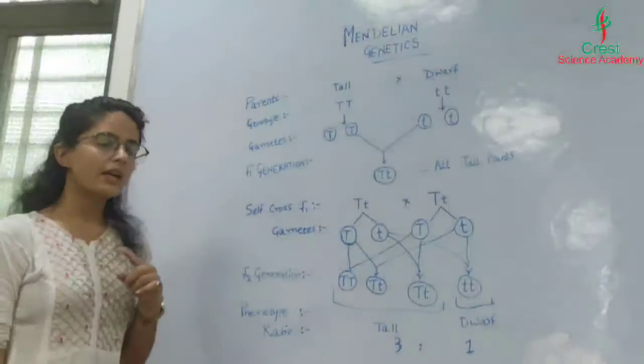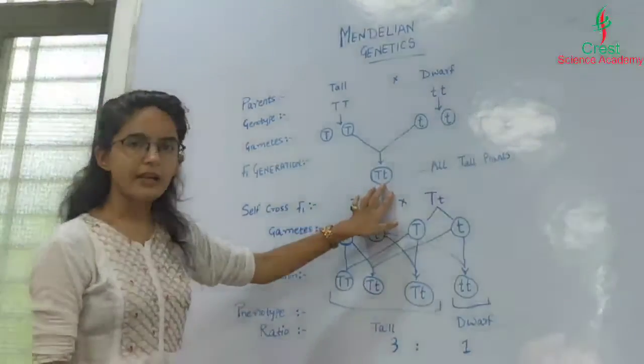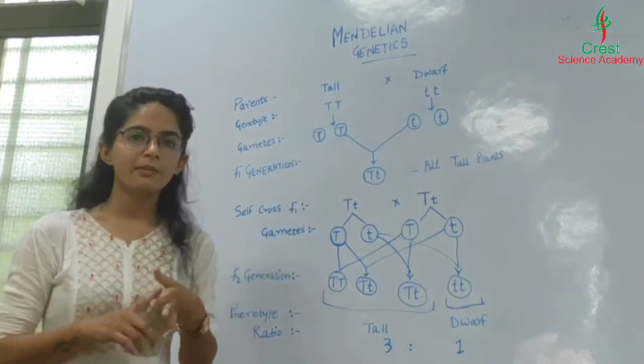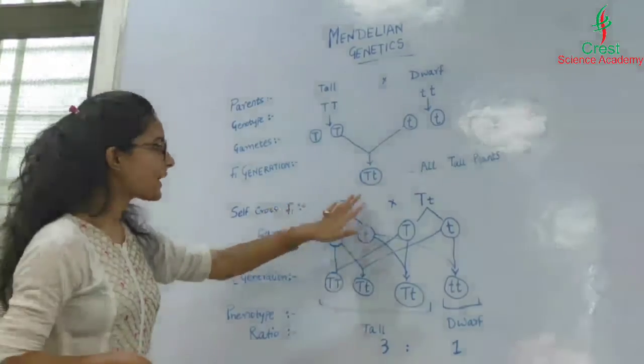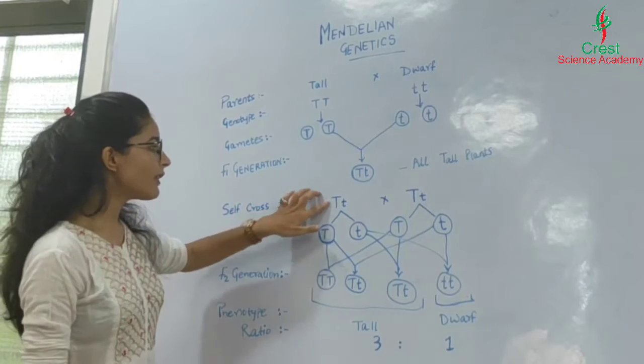Due to this, he concluded that the capital T and small t alleles, though they remain in the same genotype, never get mixed up. They get segregated during gamete formation, which you can see here.